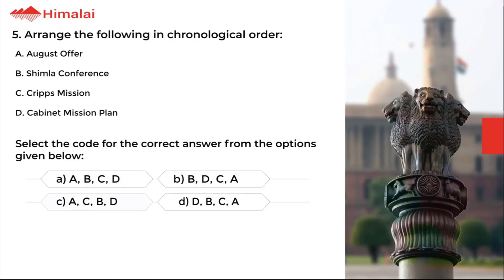Question number 5. Arrange the following in chronological order: A. August Offer, B. Shimla Conference, C. Cripps Mission, D. Cabinet Mission Plan. Select the code for the correct answer from the options given below. The correct option is C.